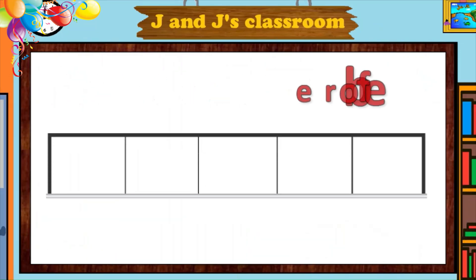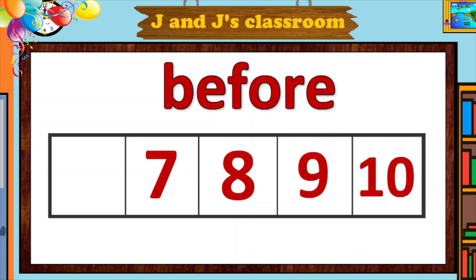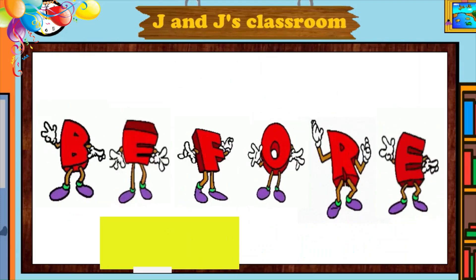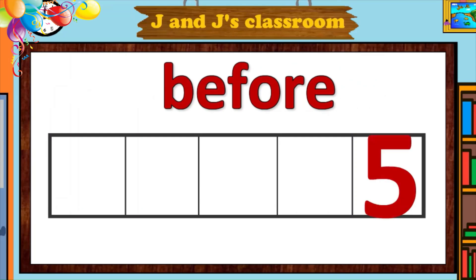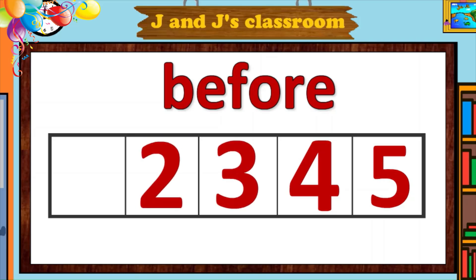Before. Before ten is nine. Before nine is eight. Before eight is seven. Before seven is six. Before six is five. Before five is four. Before four is three. Before three is two. Before two is one.